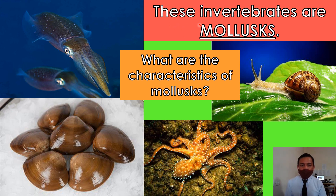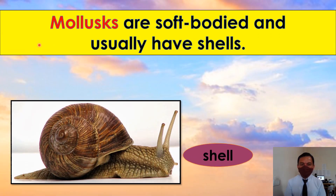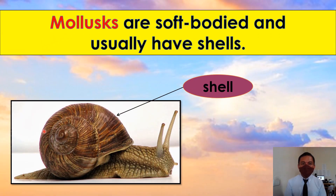Look at the picture. These invertebrates are mollusks. What are the characteristics of mollusks? Mollusks are soft bodied and usually have shells. Look at the picture — this part is a shell.